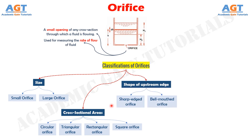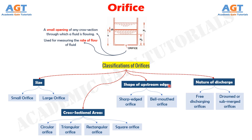Number 3: the orifices are classified as sharp edged orifice and bell mouthed orifice, depending upon the shape of the upstream edge of the orifices.